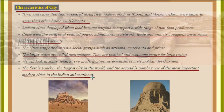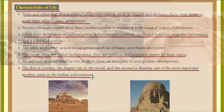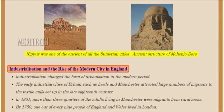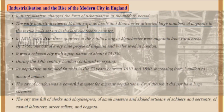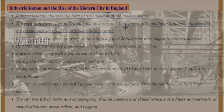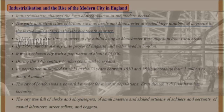The second city is Bombay, one of the most important modern cities in the Indian subcontinent. Nippur was one of the most ancient of all the Sumerian cities, and Mohenjo-daro is another example of an ancient urban structure. Industrialization changed the form of urbanization in the modern period.